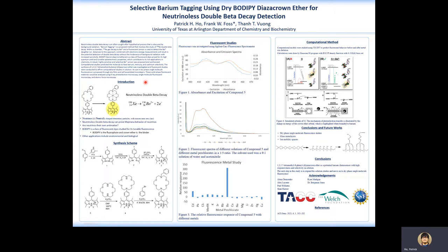Barium tagging is a proposed method that involves the study of xenon-136 gas decaying into barium 2+, and a chemosensor is used to detect these barium 2+ daughter ions. Advances into these approaches combined with electronic energy measurements will result in potential detection of neutrinoless double beta decay. It can help understand the behavior of neutrinos and lead to further understandings of the origins of matter in the universe.